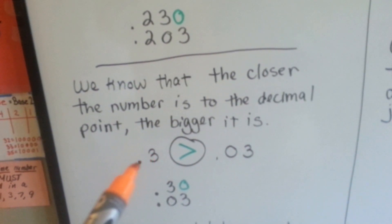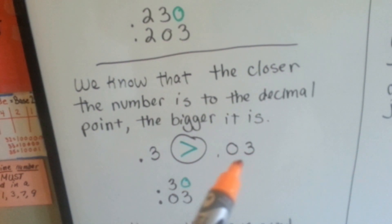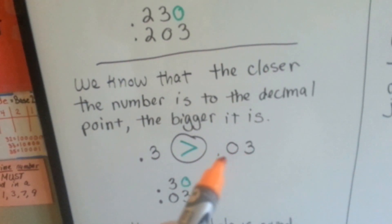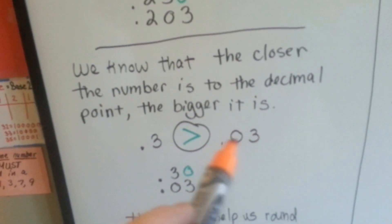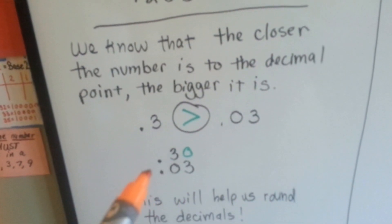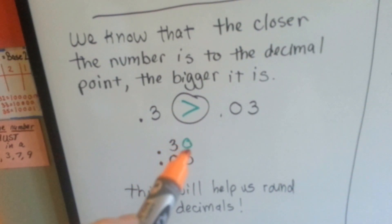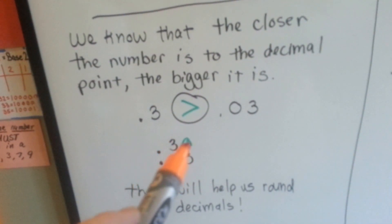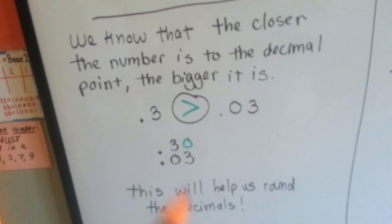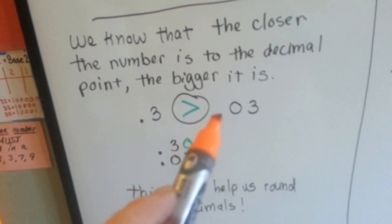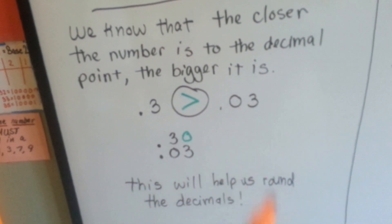Point three, which is three-tenths, compared to three one-hundredths, which is farther away from the decimal point because there's a zero between it and the decimal point. If we add a zero to the end of the three-tenths, we can see that thirty is much bigger than three. The farther away you get from the decimal point, the smaller you get.